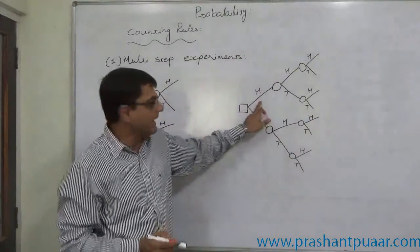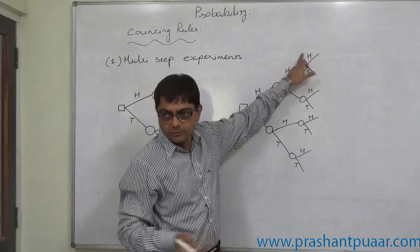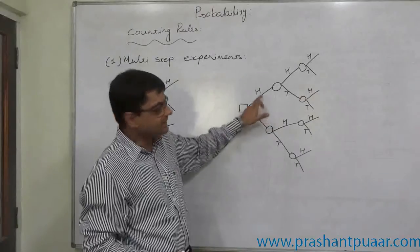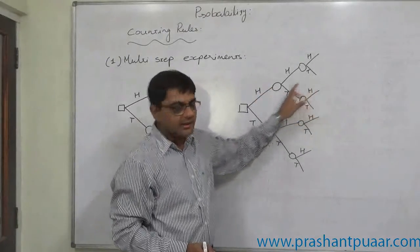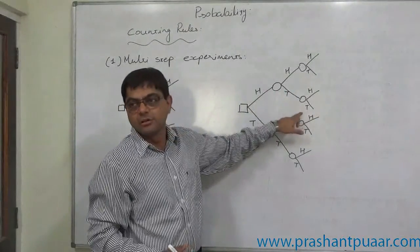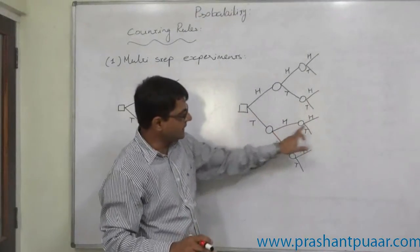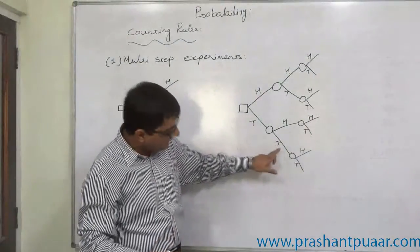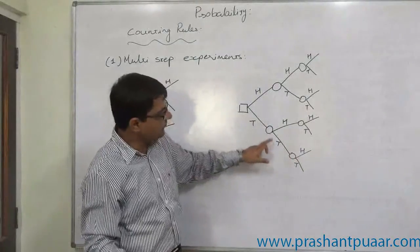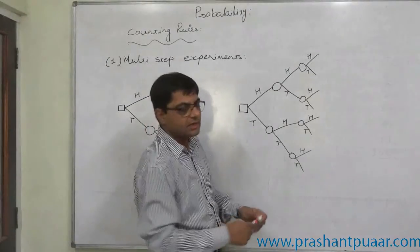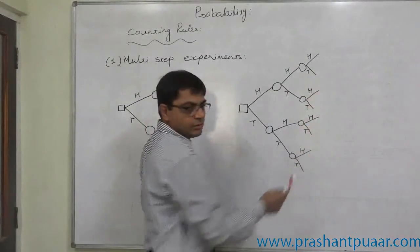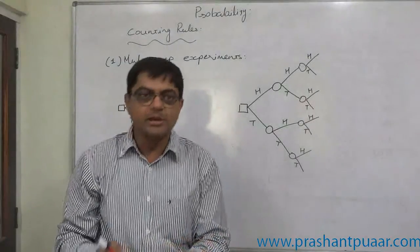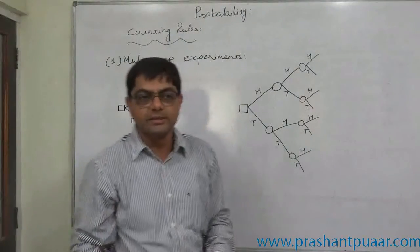So we get outcomes like: head on the first coin, head on the second, head on the third; or tail on first, tail on second, head on third; or tail on first, tail on second, tail on third — and so on for all branches. Total number of possible outcomes comes to 8: two in the first trial multiplied by two in the second trial multiplied by two in the third trial — 2 × 2 × 2 = 8.